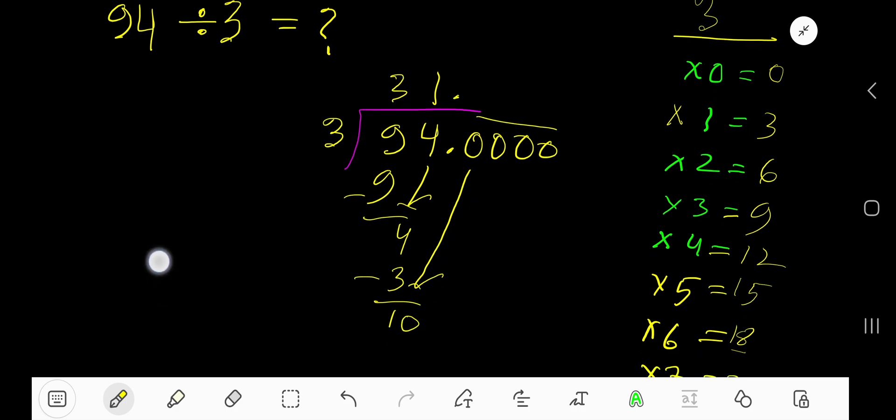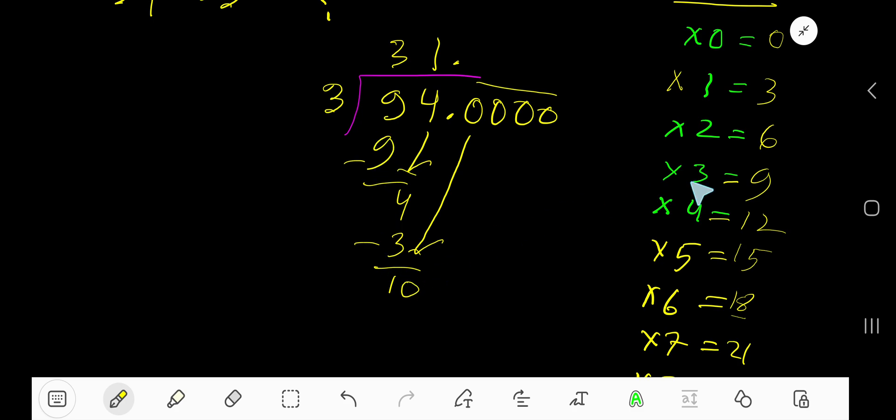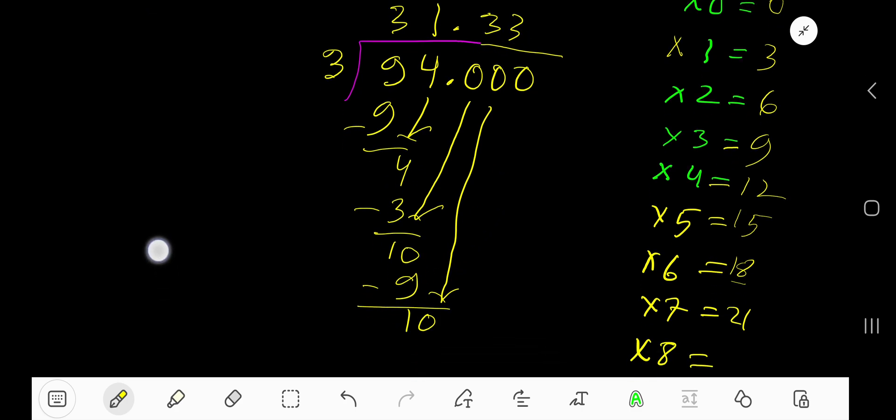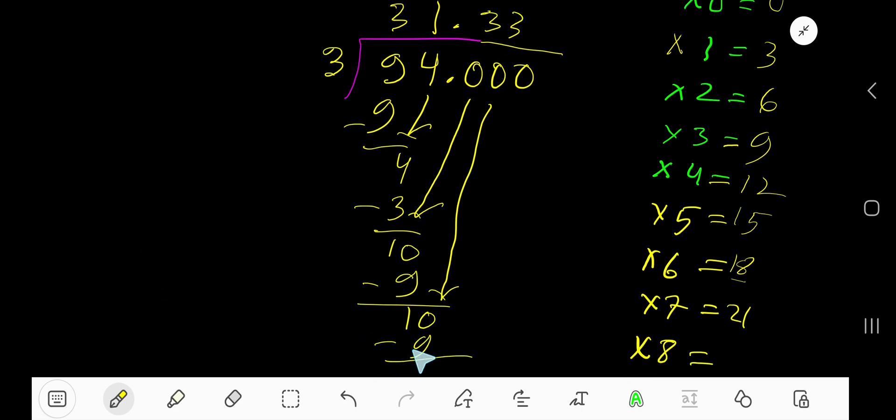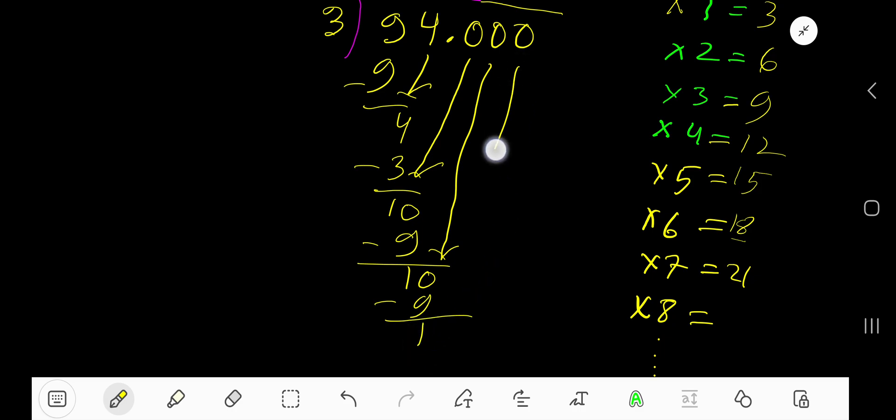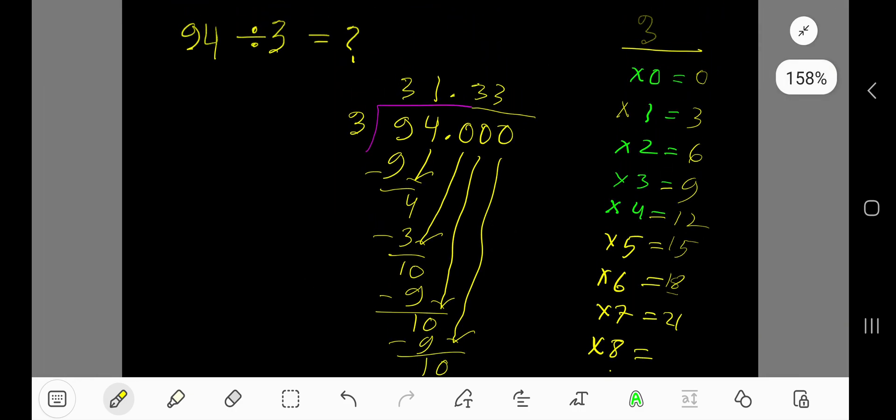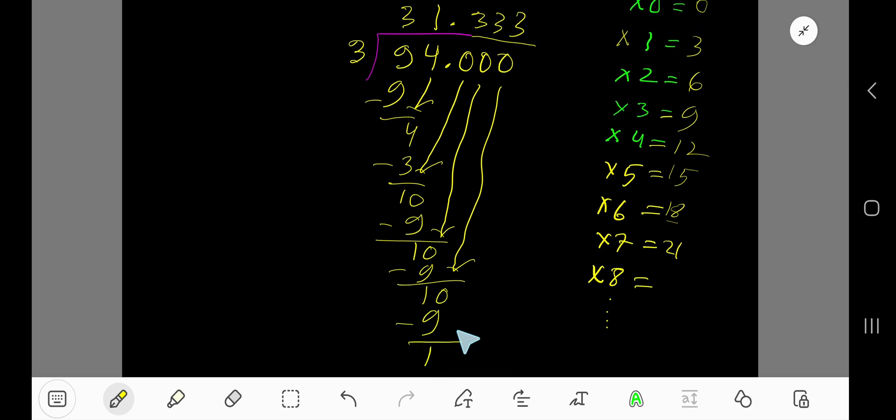3 goes into 10 how many times? 3 times. 3 times 3 is 9, subtract 1. Bring down the next zero, 10. 3 goes into 10, 3 times 3 is 9, subtract 1. This pattern repeats. You can add more zeros.